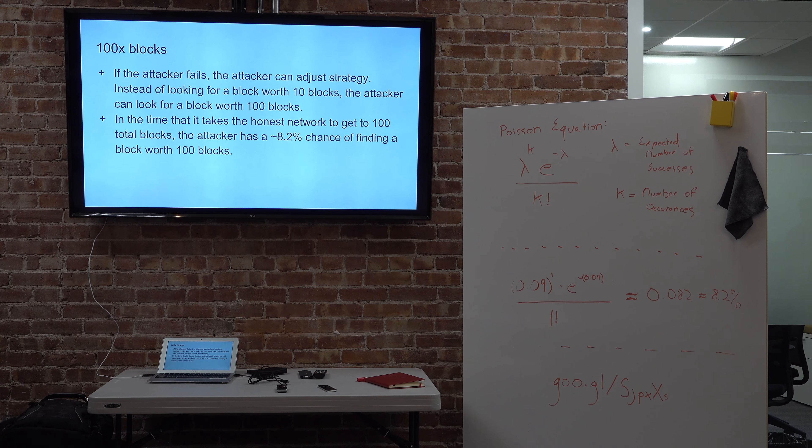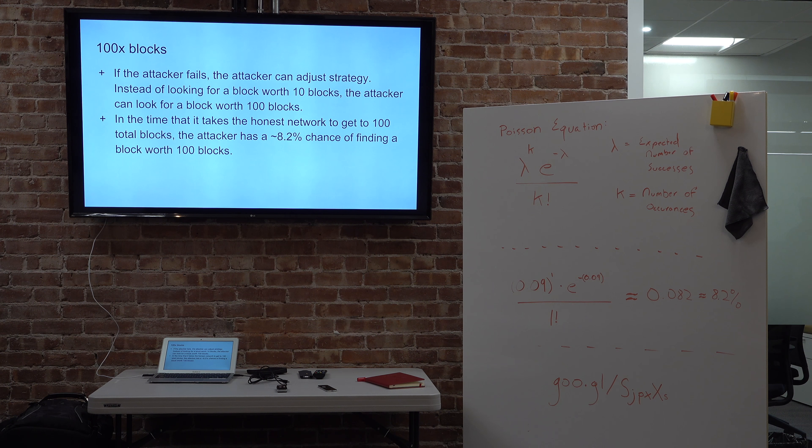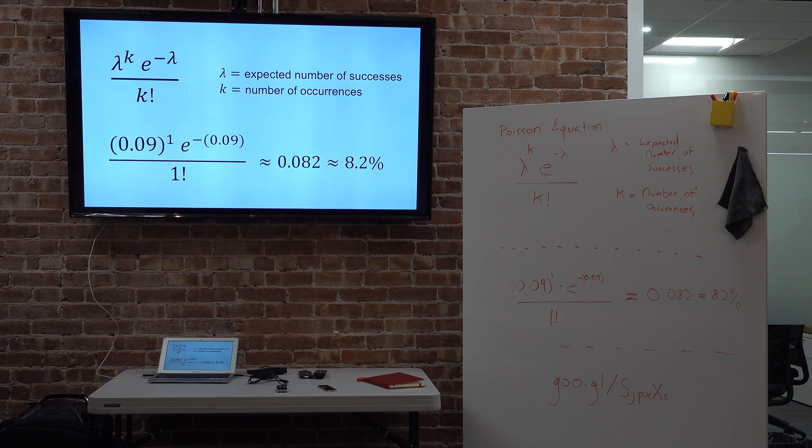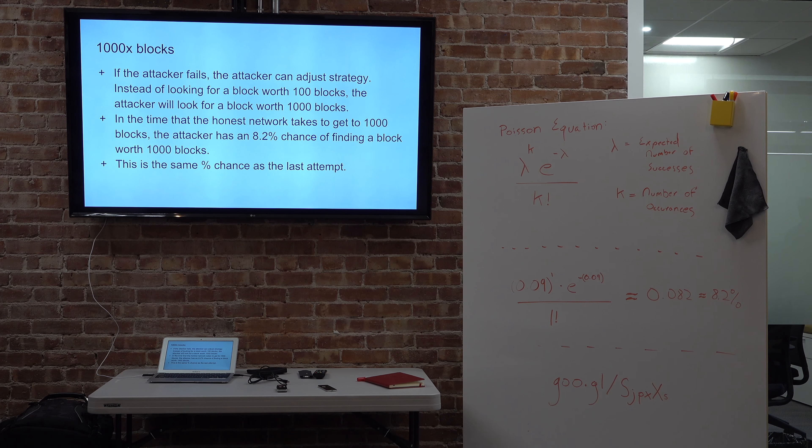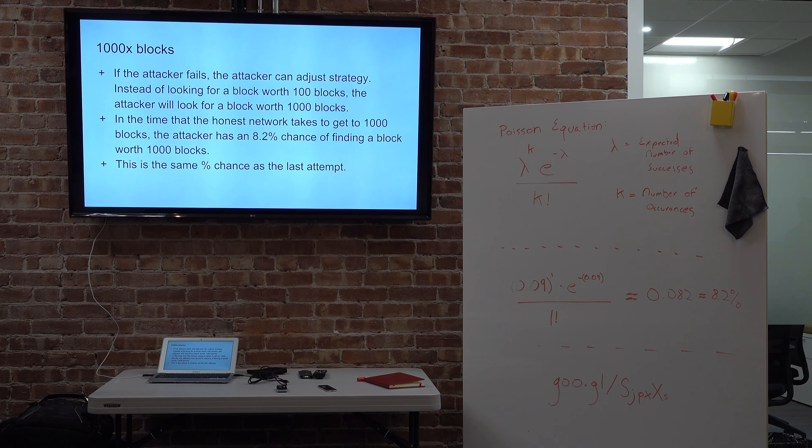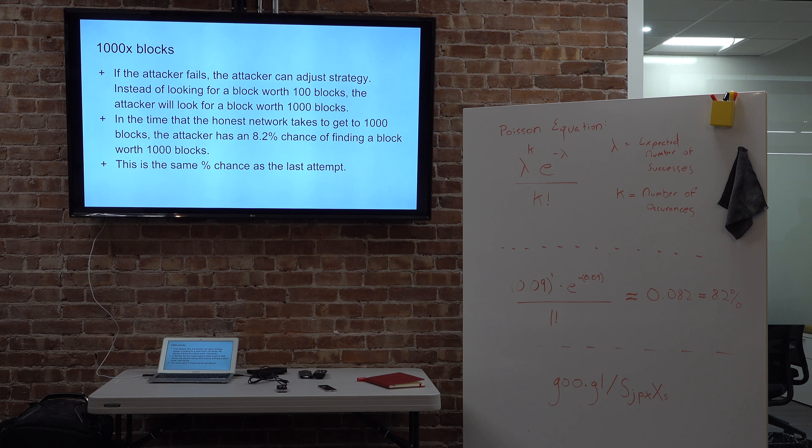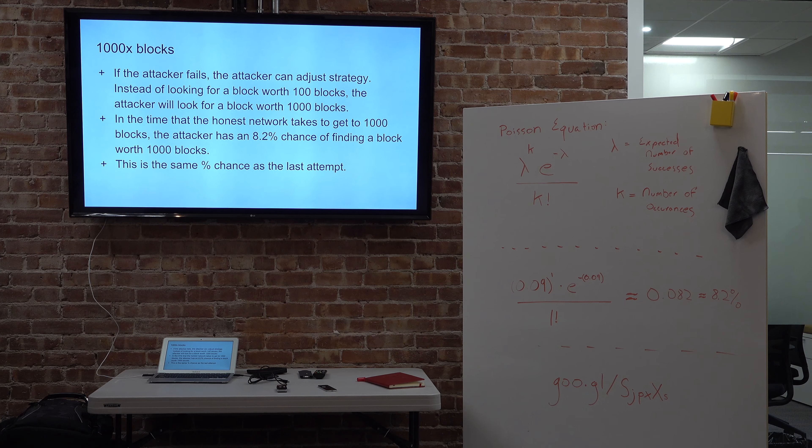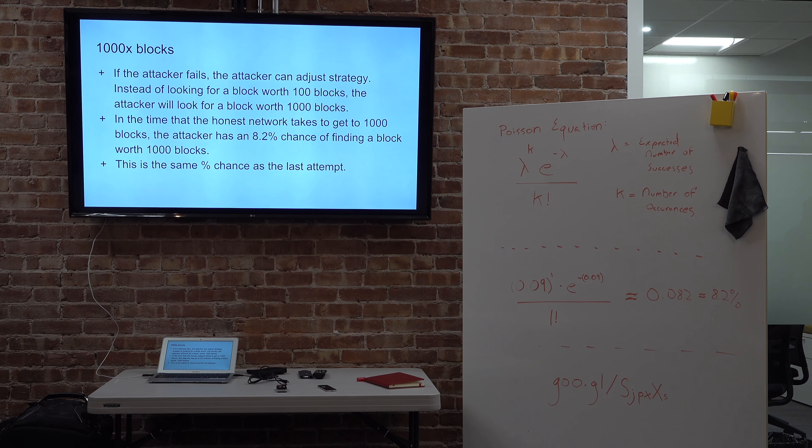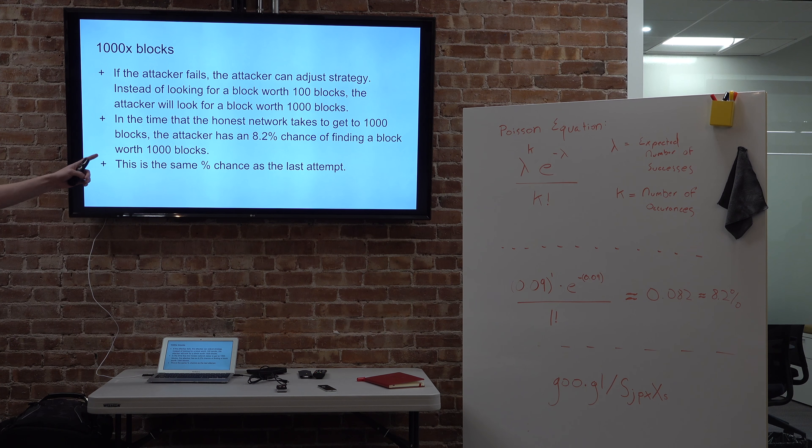So again, 8.2%, not that high. It's a little bit less than last time. So we're going to try again. Oh, here's our equation. We're going to try again. This time, instead of doing 100 blocks, we're going to do 1,000 blocks. And if you run the math, the chance that we find a block worth 1,000 blocks before the honest chain can get from 100 blocks to 1,000 blocks is, once again, it's 8.2%.